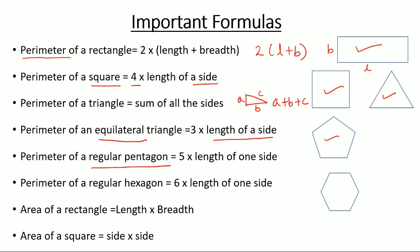Perimeter of a regular hexagon. Regular again means the same thing — equal sides and equal angles — and hexagon means 6 sides. Like this one, it has 6 equal sides.